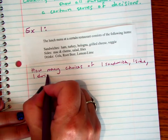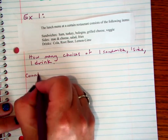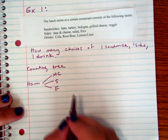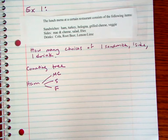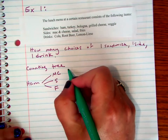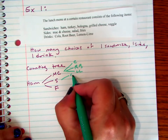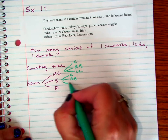One way you might want to use a counting tree — so the first example, I didn't feel like writing it down today, and I also thought it would take a little less time for you to look at it if it was already typed out. So a lunch menu at a certain restaurant consists of the following items. Sandwiches: we have ham, turkey, bologna, grilled cheese, and veggie. And then we have sides of mac and cheese, salad, and fries, and drinks of cola, root beer, and lemon lime. So if we wanted to figure out how many different choices of one sandwich, one side, and one drink, one way to do it would be to make a counting tree.